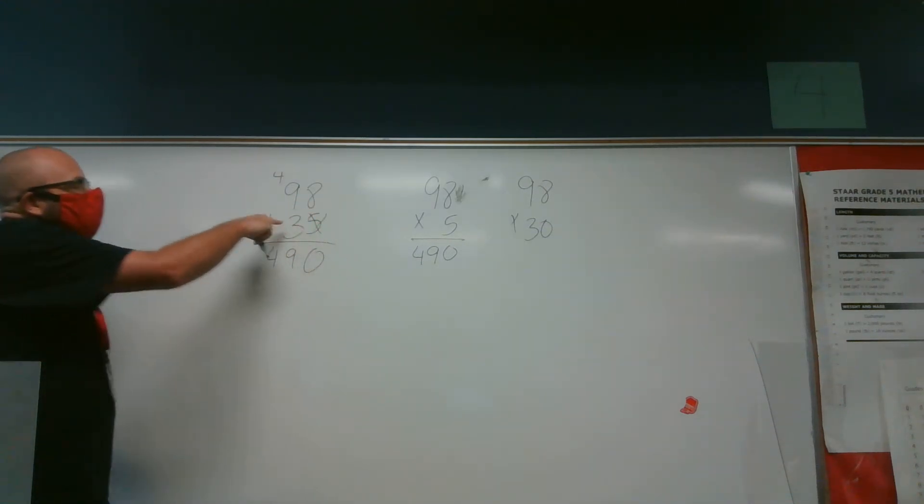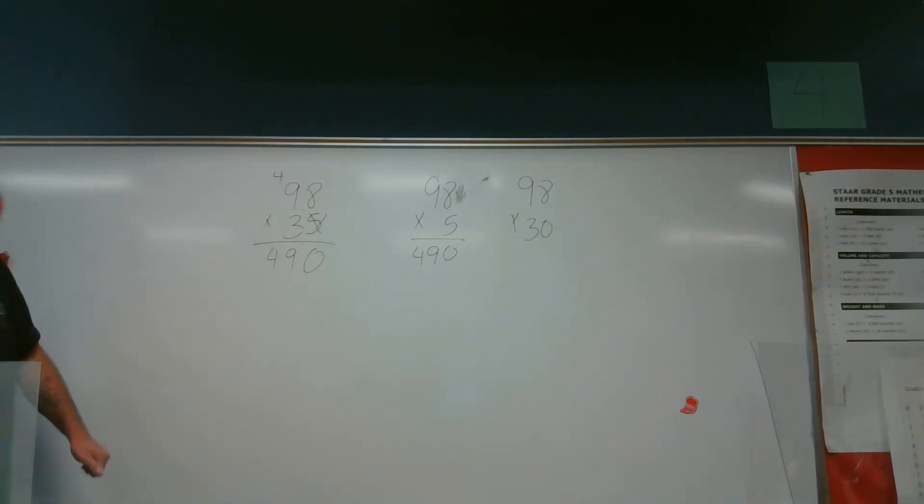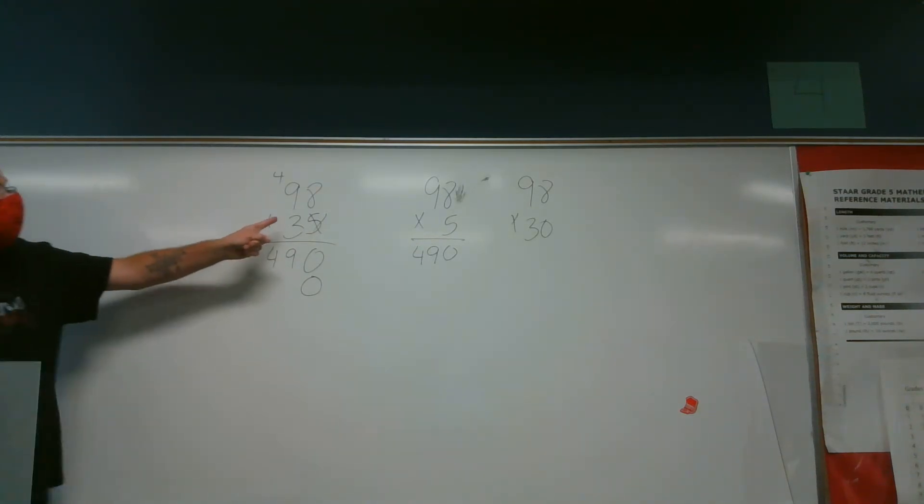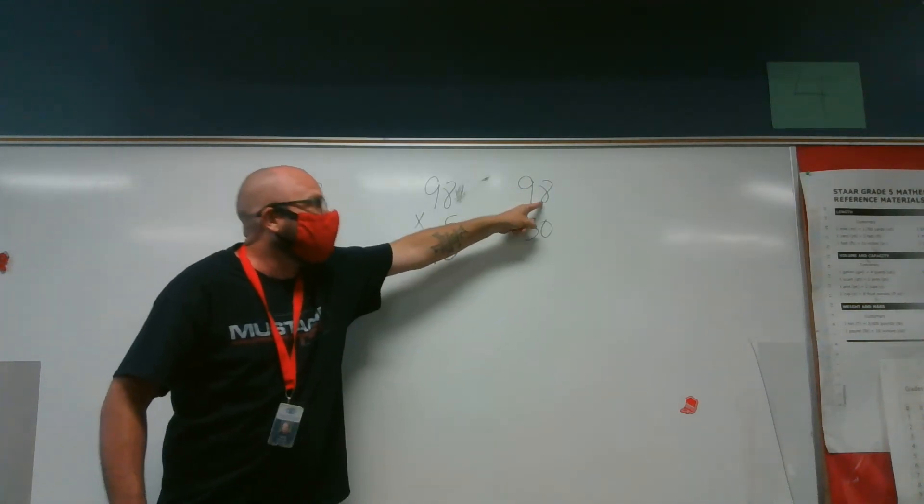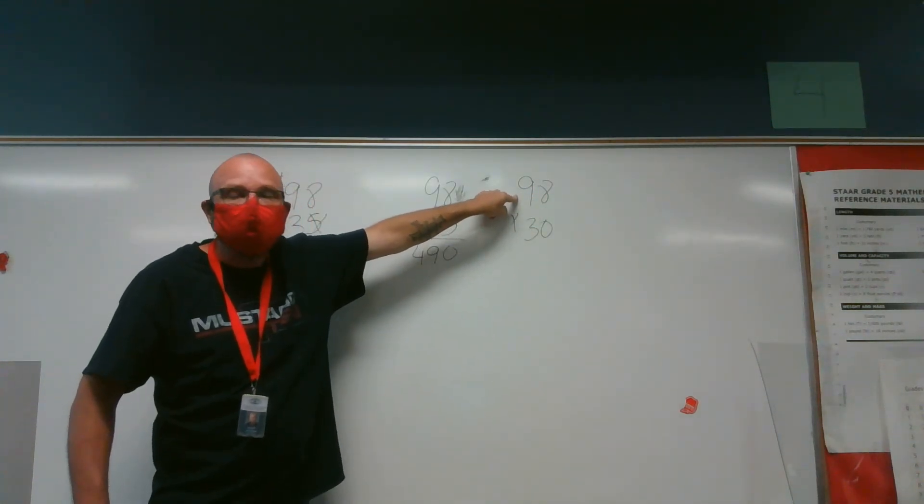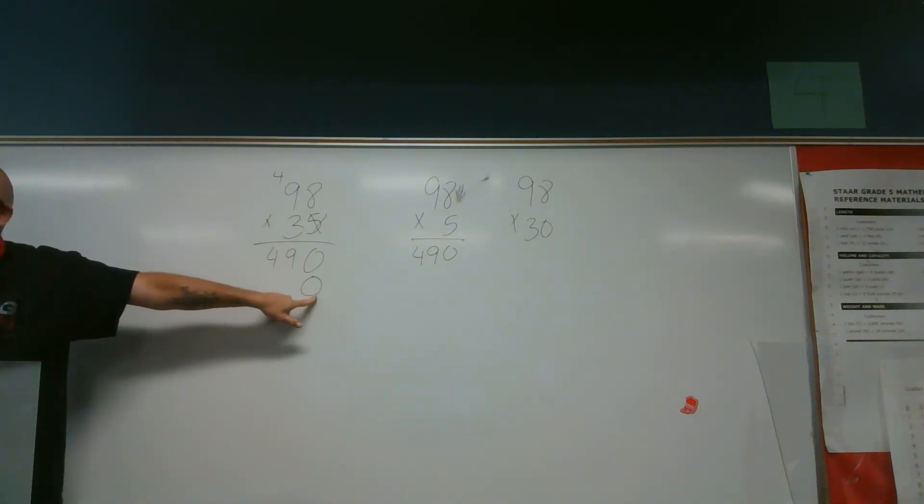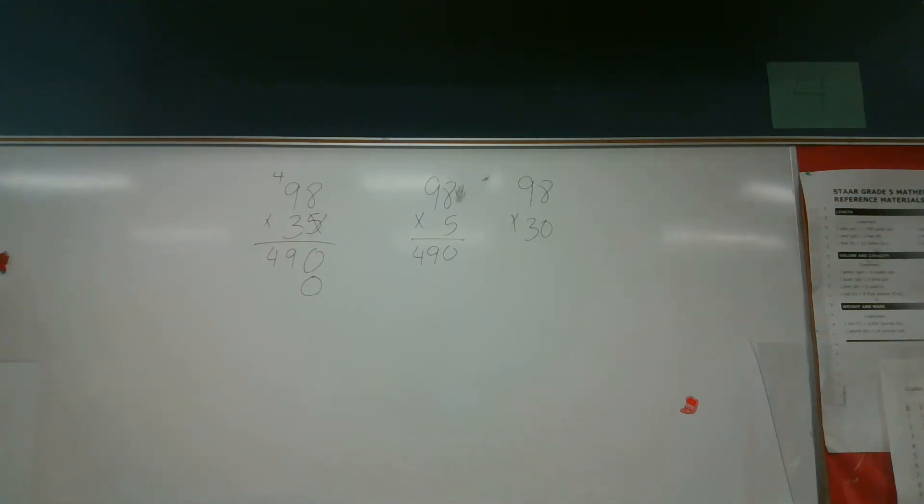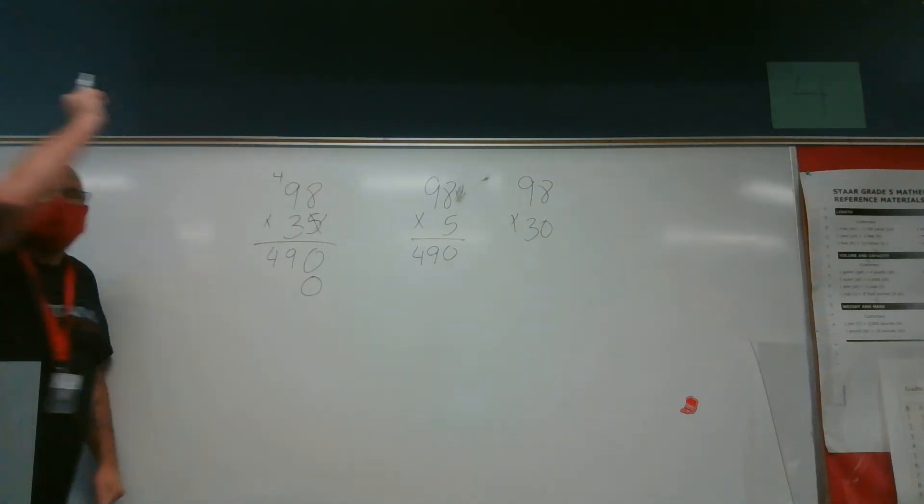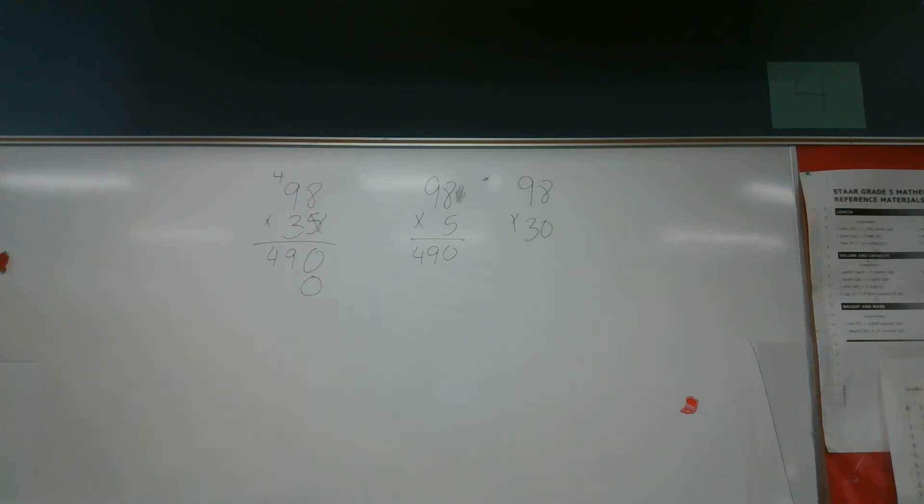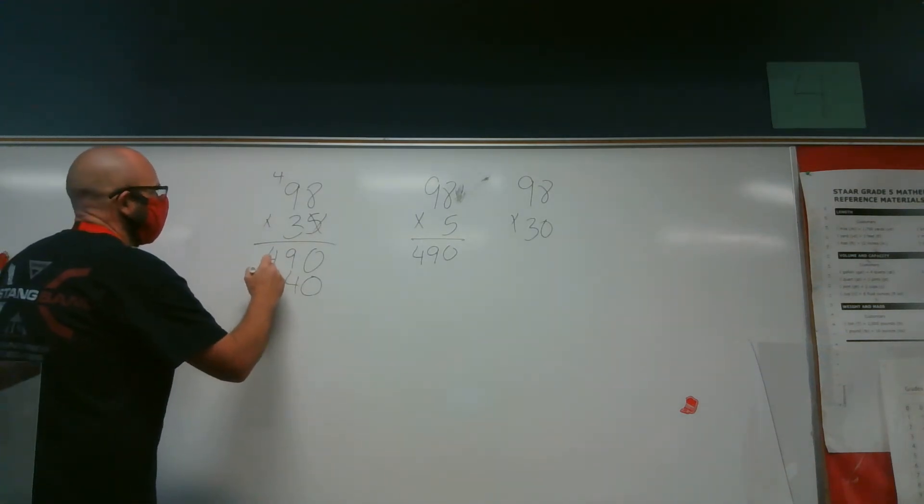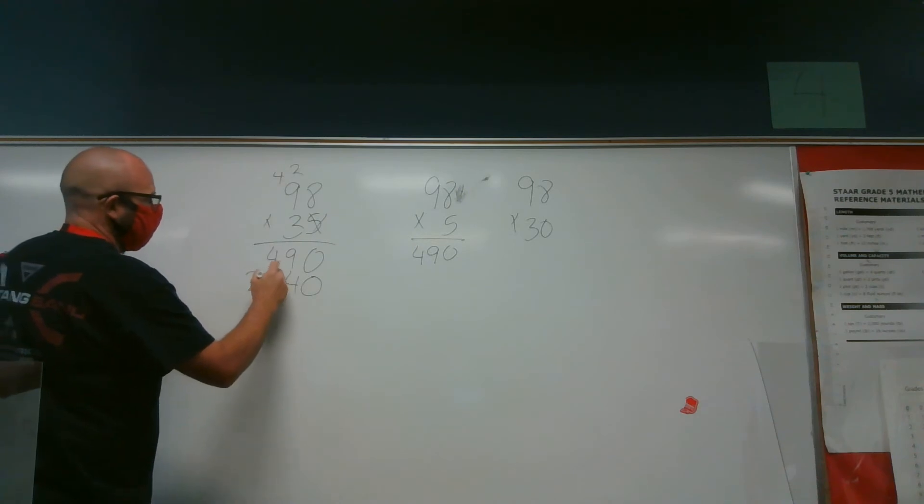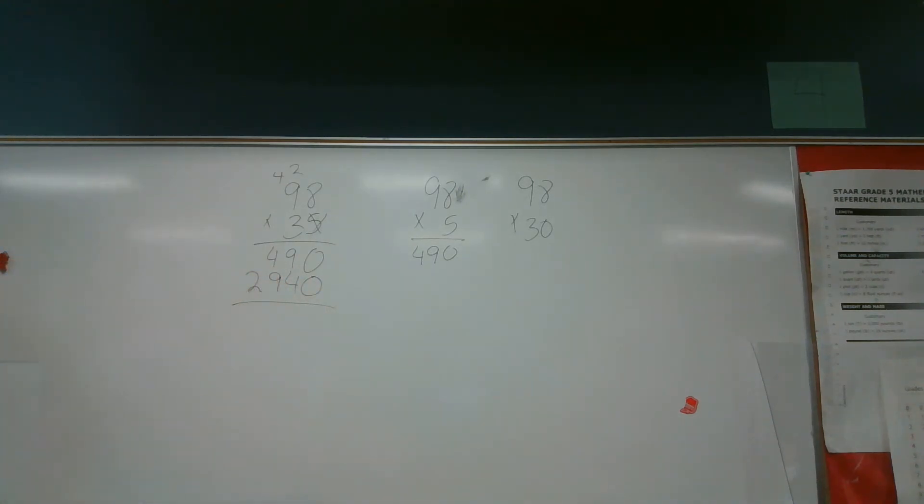All right, so now we're in our tens place. That's why that zero is there. Because we're doing 30. 30 times 8 and 30 times 9 is what you're doing. So doing that, I just put my zero down here. Make it easy peasy, raw chicken squeezy. Now I'm doing 3 times 8 is 24. 3 times 9 is 27, plus 2, so 29. Is that right? Yes. Okay.